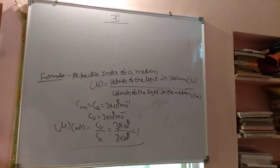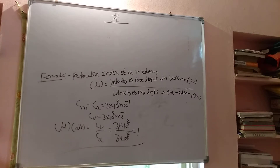So that is the process to find the refractive index. The velocity in vacuum is always constant; the velocity in the medium is what is given, and based on that we find the refractive index of that medium.